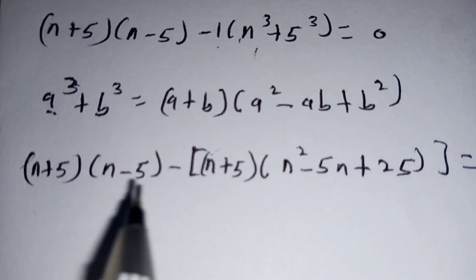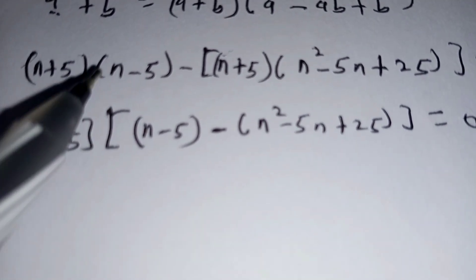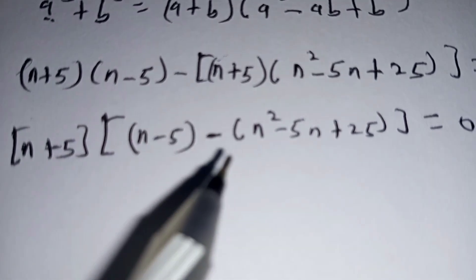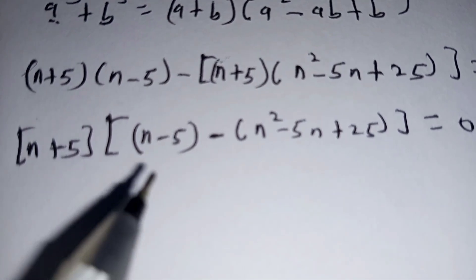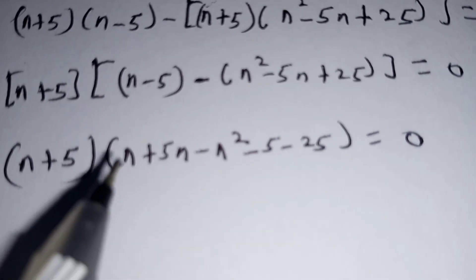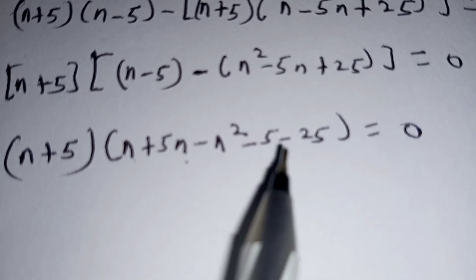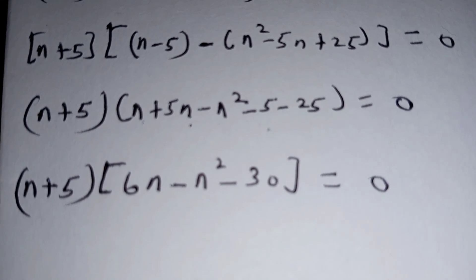Clearly you can see that n plus 5 is common. So we factorize n plus 5 outside. Factorizing, in the first part we shall be left with bracket n minus 5, and in the last part we are left with this quadratic part. Simplifying the inner bracket: you have n plus 5n giving 6n, and the negative 5 and the negative 25 giving negative 30. So that is what we have here.